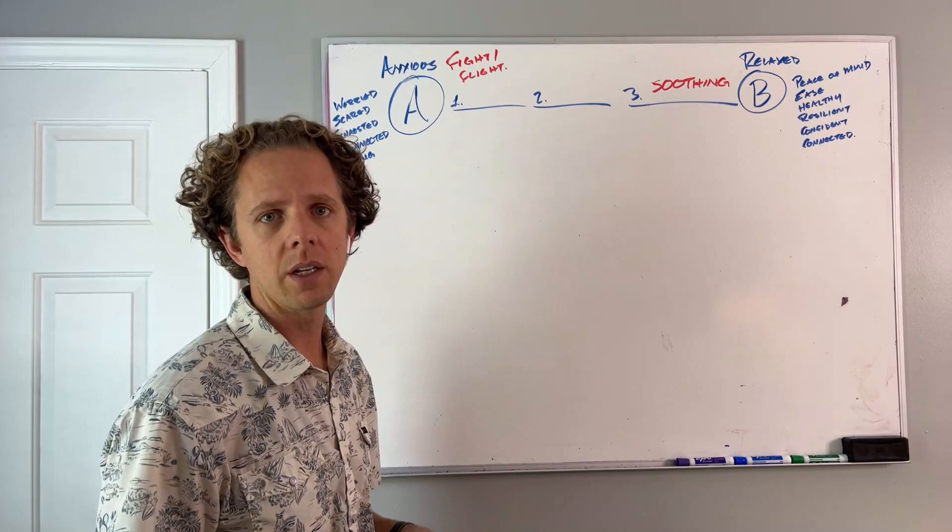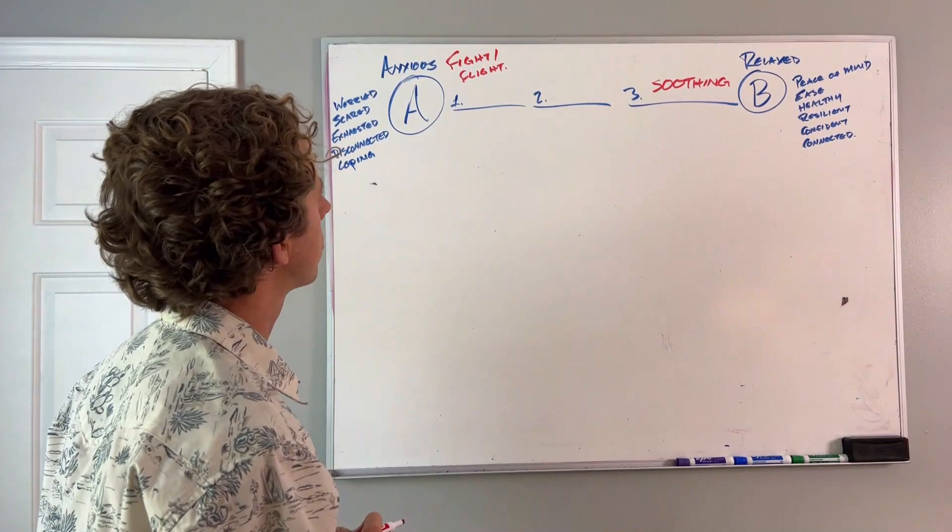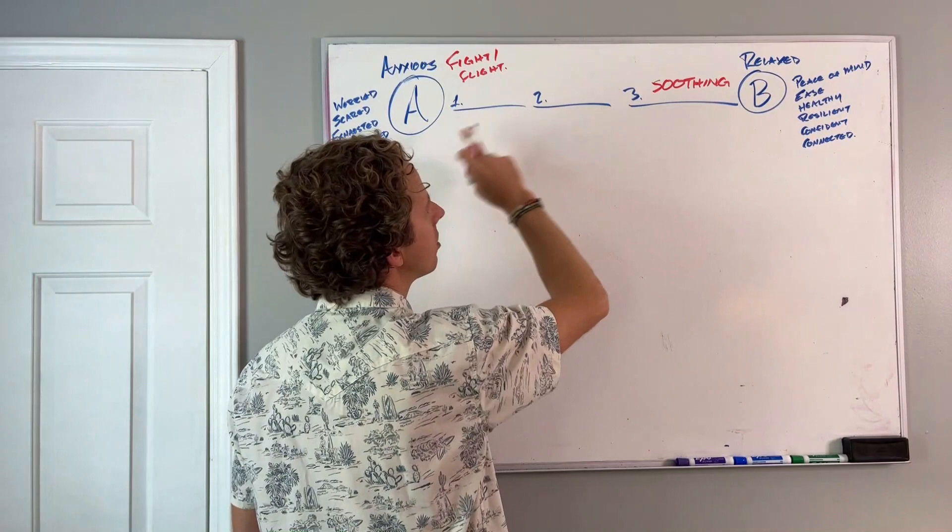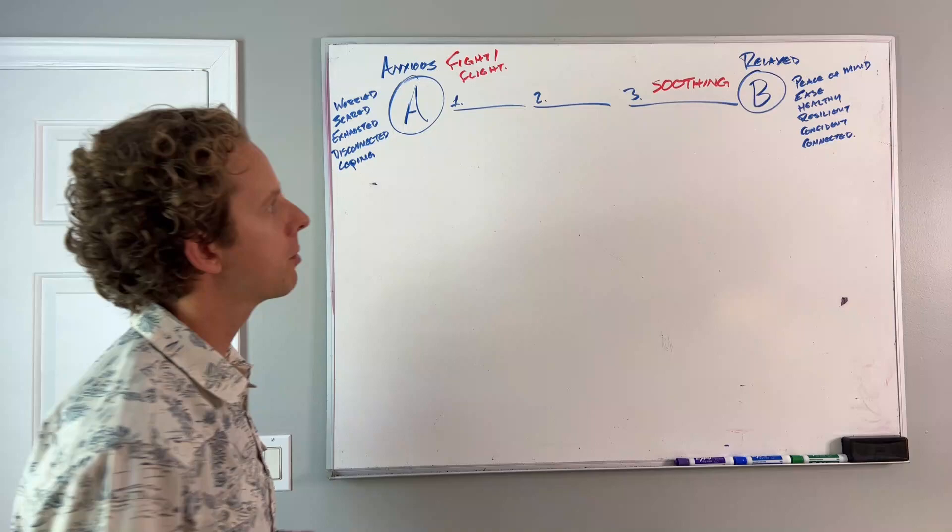We're going to talk about why soothing, which is so popular, is ineffective. And then we're going to talk about what is effective. The number one mistake is that people start with soothing. There's a three-step process to get you from feeling anxious to feeling relaxed, and soothing is part of that process. But it's really important when it comes in.